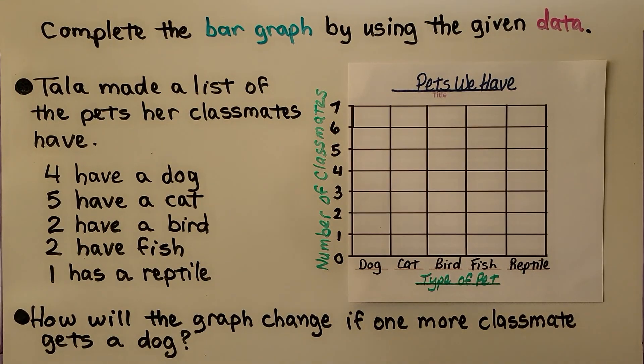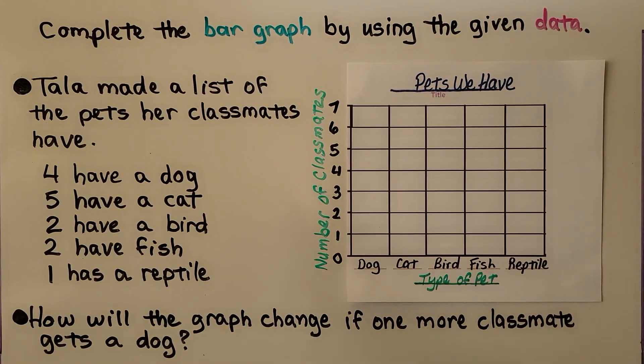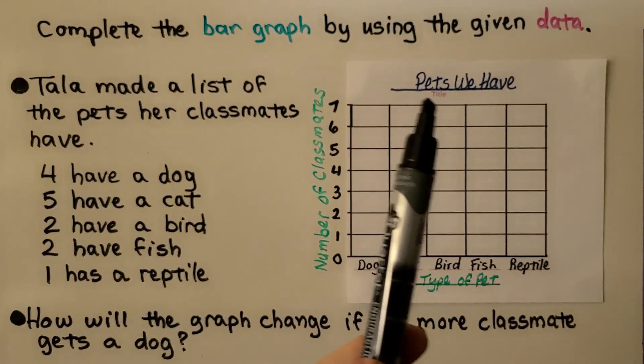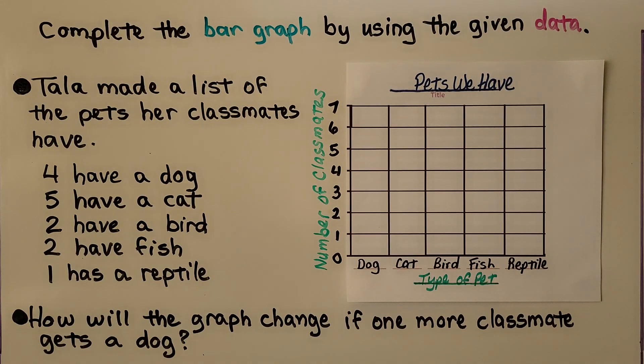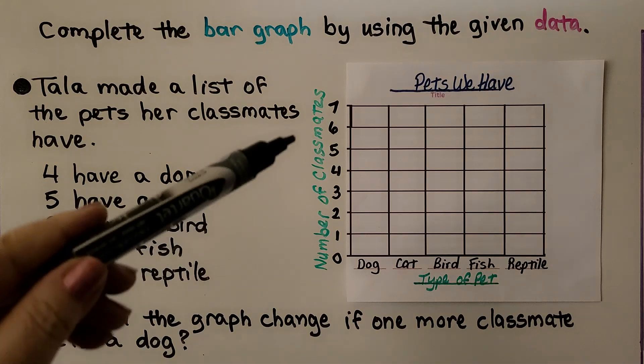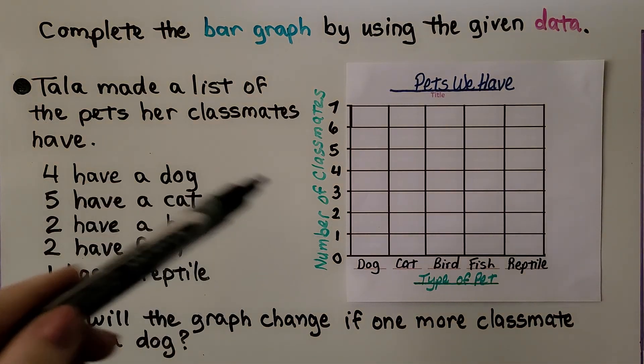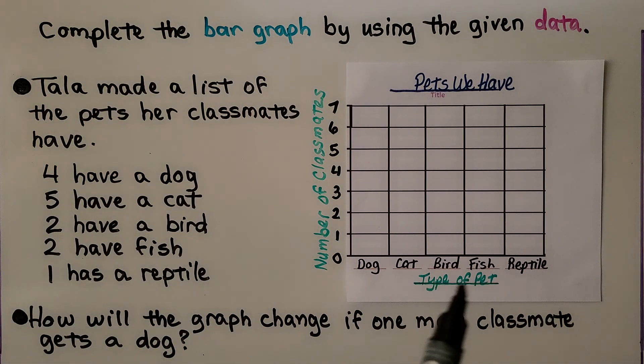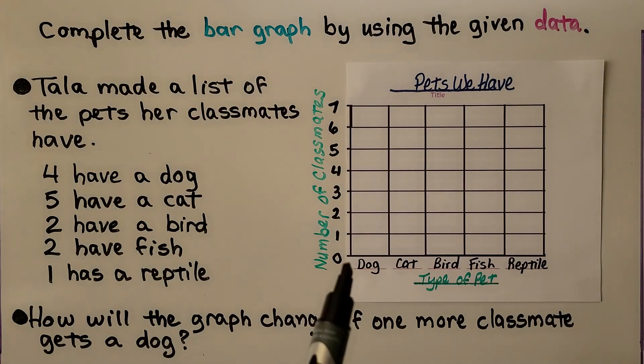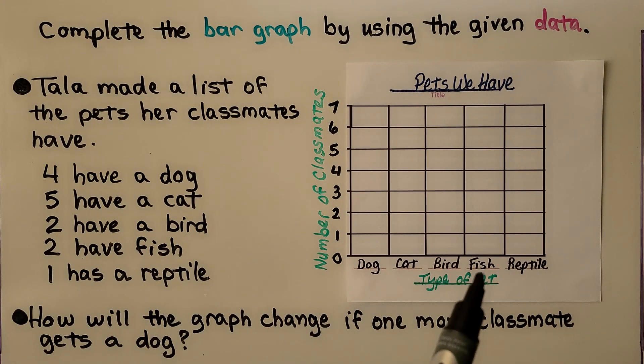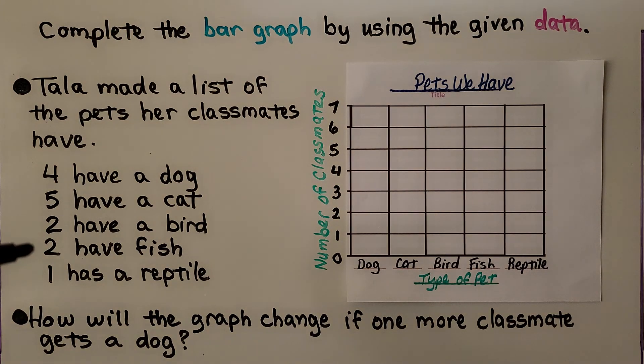Here it says complete the bar graph by using the given data. We can see the bar graph is titled Pets We Have. Here is the label number of classmates for our scale and the type of pet label tells us dog, cat, bird, fish, reptile. Tala made a list of the pets her classmates have. Four dogs, five have cat, two have a bird, two have fish, and one has a reptile.